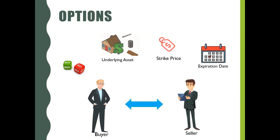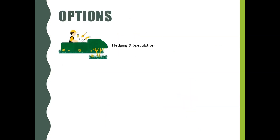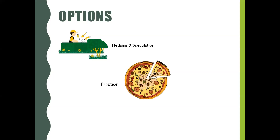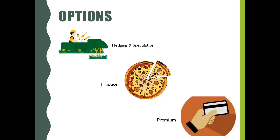Characteristics of Options: Options are used for hedging purposes but can also be used for speculation. Options cost a fraction of what the underlying shares would cost. Options allow an investor to make a bet on the stock without having to buy or sell the stock. In exchange for this privilege, the options buyer pays a premium to the party selling the option.